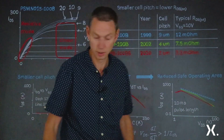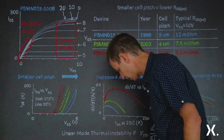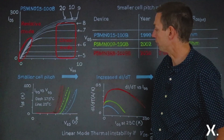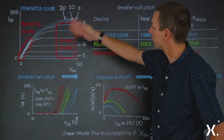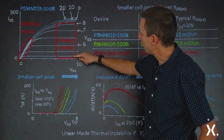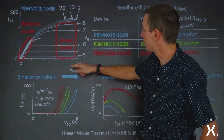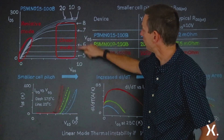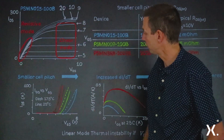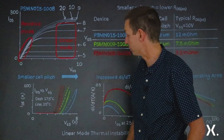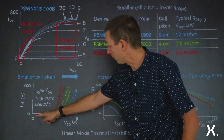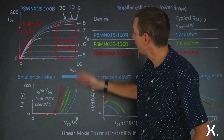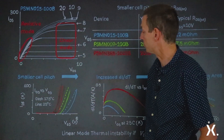Let's now consider the graph down the bottom left — the transfer characteristics. If we have a fixed source-drain voltage, for example sitting at 10 volts, how does the current out of the MOSFET change as a function of gate bias? That's exactly what's been plotted: the gate bias is along the bottom, and we've got the source-drain current at a fixed drain voltage in this linear mode situation.